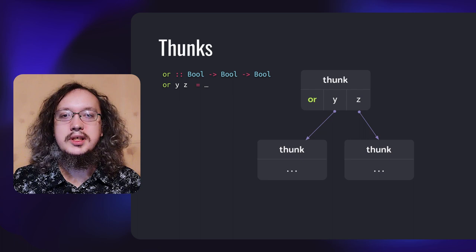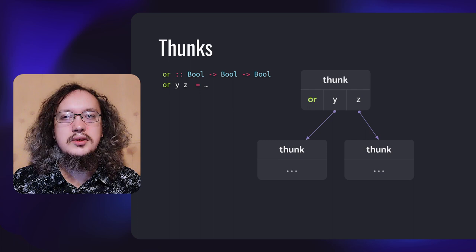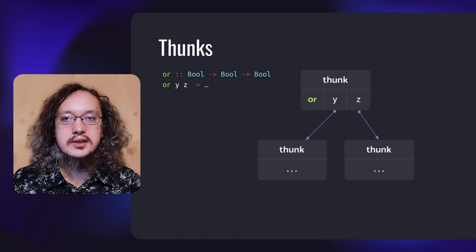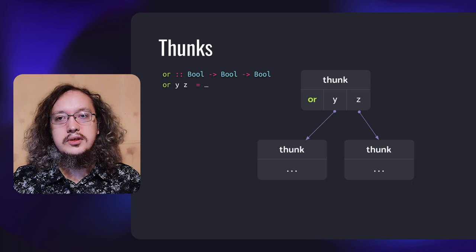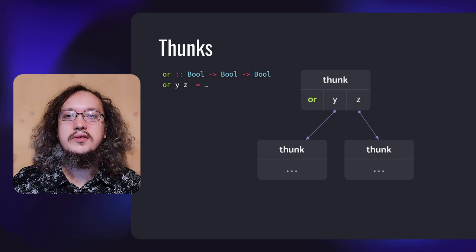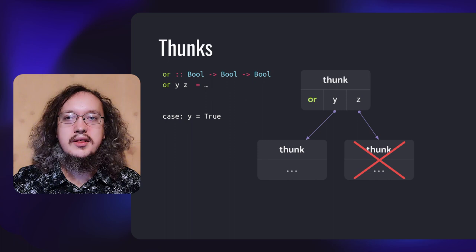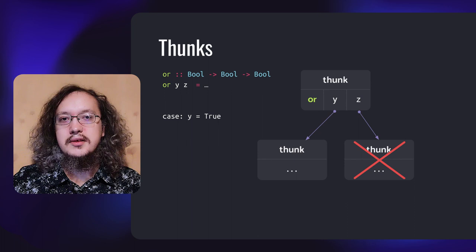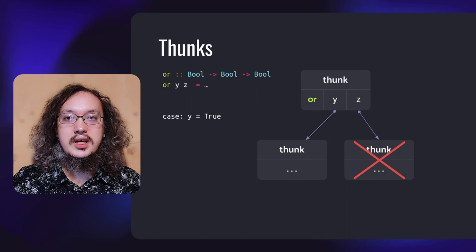Let's take a look at a simple example. Here we reduce an application of function OR to two arguments. Reducing it, we form a THUNK with an application of OR to Y and Z. Y and Z could also be THUNKs in a common case. Whether these external THUNKs are reduced or not depends on the instruction inside our main THUNK. Application of the function OR requires reducing at least one of its arguments to get an actual result. Imagine that the value of the first argument is true — it means that the result does not depend on the second argument at all. Therefore, it would never be reduced.